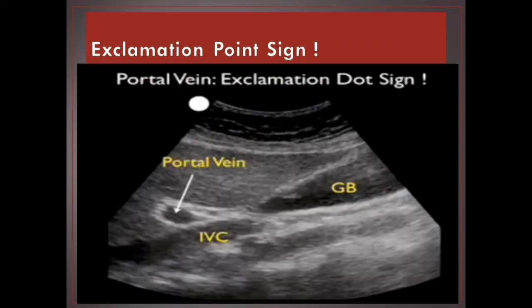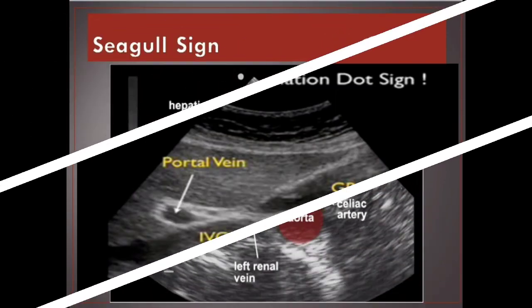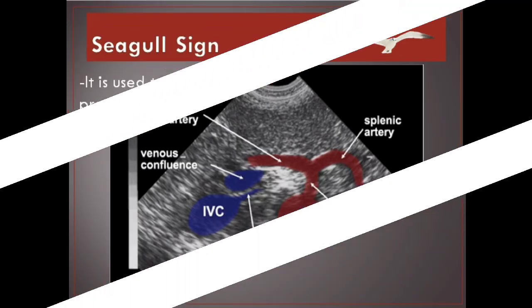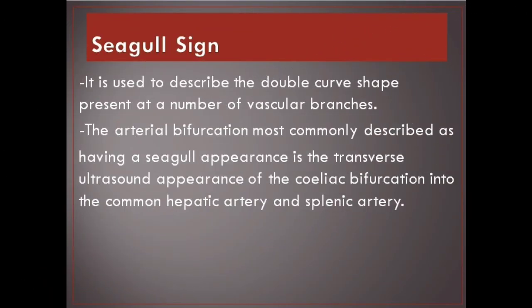Exclamation point sign — portal vein and main lobar fissure. Seagull sign: used to describe the double curve shape present at a number of vascular branches. The arterial bifurcation most commonly described as having a seagull appearance is the transverse ultrasound appearance of the celiac bifurcation into the common hepatic artery and splenic artery.